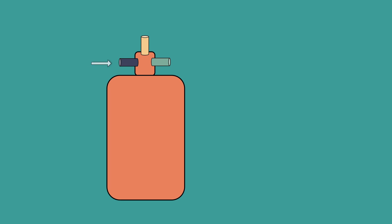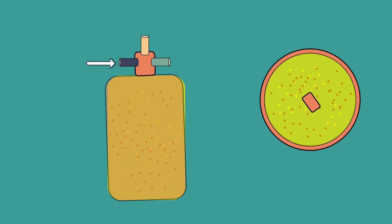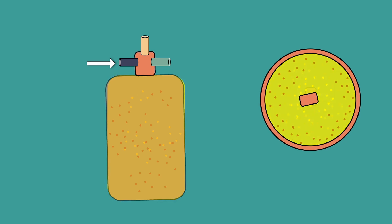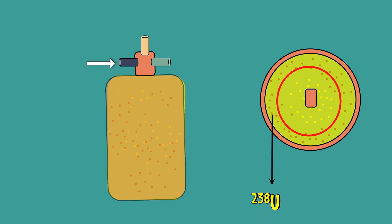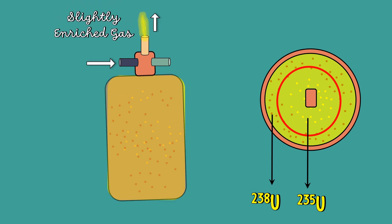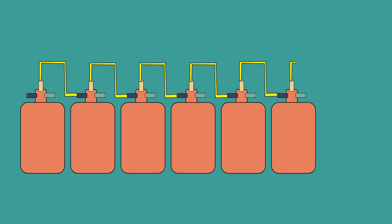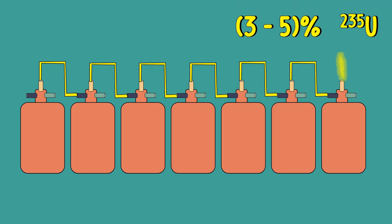This gas is fed into a cylinder rotating at very high speed. This rotation creates a strong centrifugal force so that uranium-238 is pushed to the cylinder walls and the uranium-235 is collected closer to the center. This slightly enriched gas is then enriched again and again in the same way until we get our desired concentration of 3-5% uranium-235.